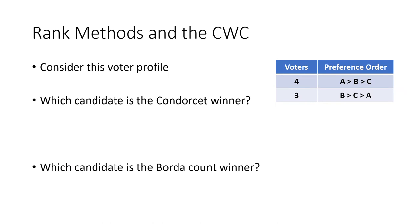So we have a voter profile here, and we want to look at how this example illustrates whether or not a rank method satisfies the Condorcet winner criterion. The Condorcet winner criterion, abbreviated CWC, means that if there is a Condorcet winner — a candidate that beats all opponents in one-on-one matchups — then our method should find the same winner as the Condorcet method. We want these two winners to match.